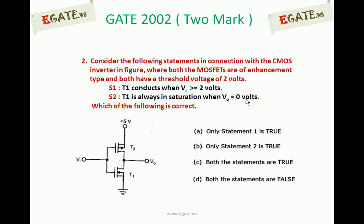Statement 1: T1 conducts when VA is greater than or equal to 2 volts. Statement 2: T1 is always in saturation when V0 is equal to 0 volts. Which of the following is correct? A. Only statement 1 is true. B. Only statement 2 is true. C. Both statements are true. D. Both statements are false.